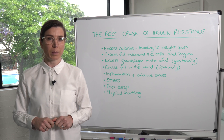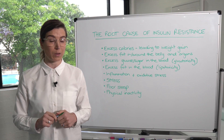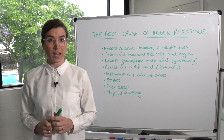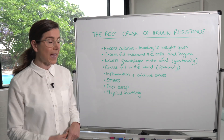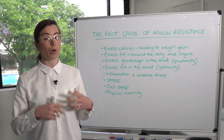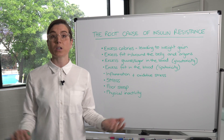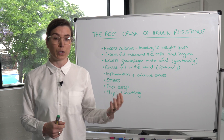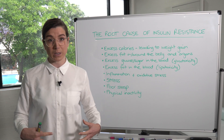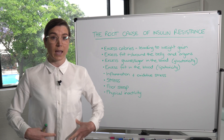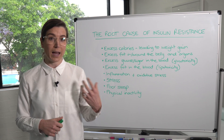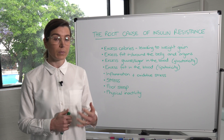In part one we discussed what is at the root cause of diabetes and insulin resistance. So just a recap: first of all, excess calories leading to weight gain. If you're over-consuming food, it doesn't matter what type of food it is, you're more likely to gain weight — and we know that this weight gain, particularly the fat around the belly and the organs, is particularly detrimental.